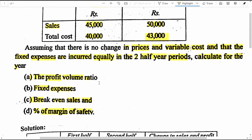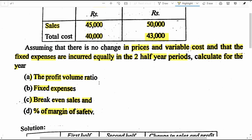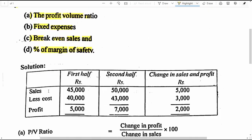Now let's calculate profit volume ratio with a formula. The formula for calculating PVR in this problem is: changes in profit divided by changes in sales, multiplied by 100. First, let's prepare a small statement to find the profit for the two half year periods. Sales for the first half year: 45,000 minus cost 40,000 gives 5,000 rupees profit. Second half year: sales 50,000 less cost 43,000, giving a profit of 7,000 rupees.